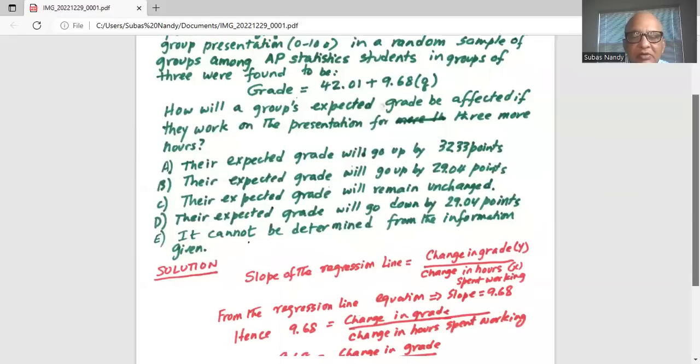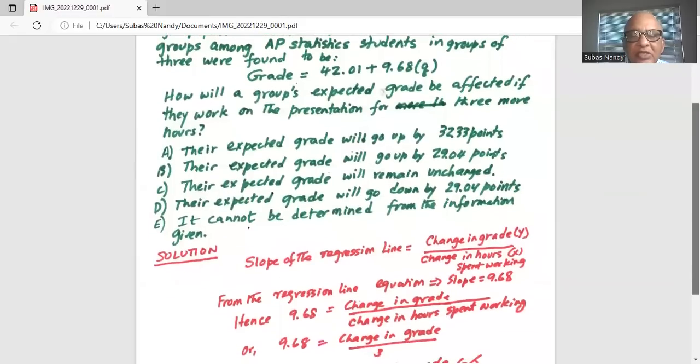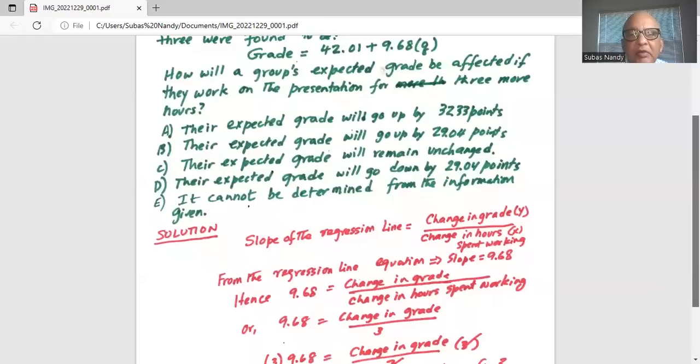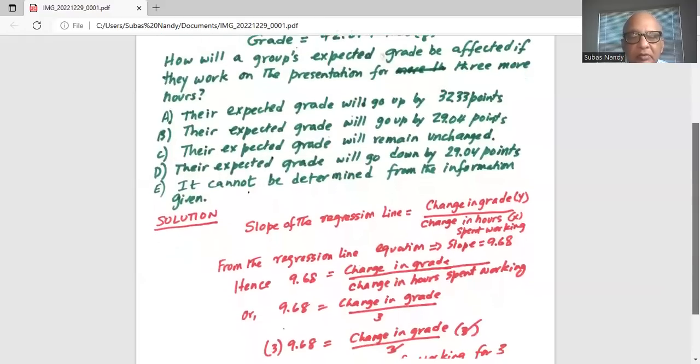Hence 9.68 equals change in grade divided by change in hours spent working. If one group spends three more hours then change in hours is 3.